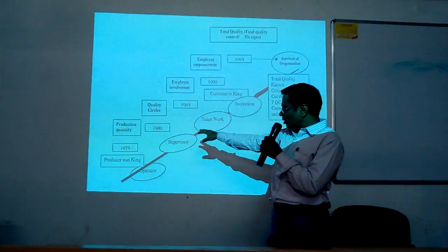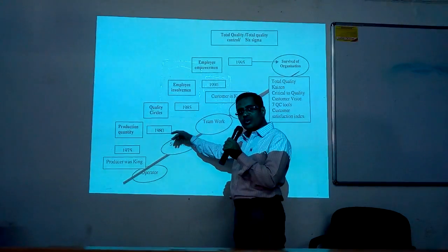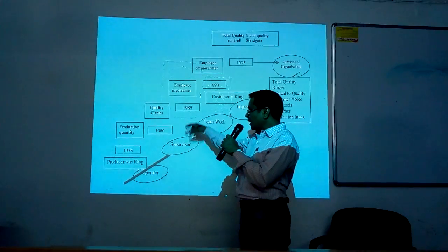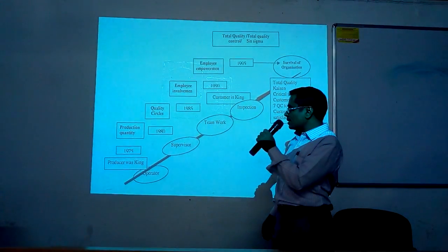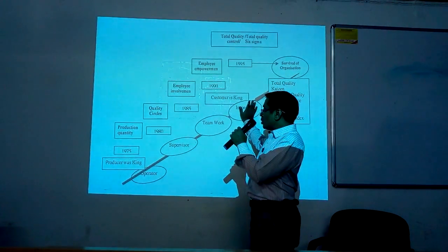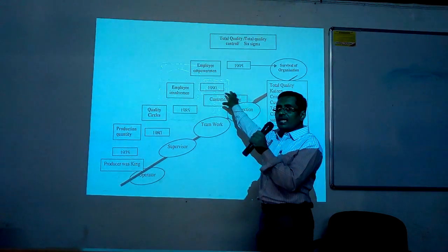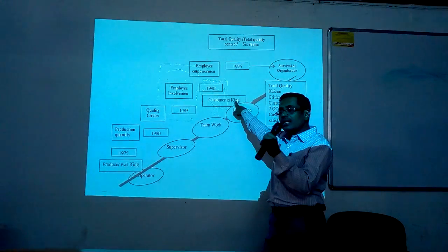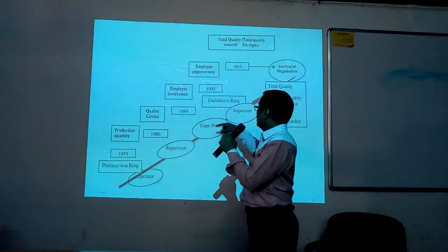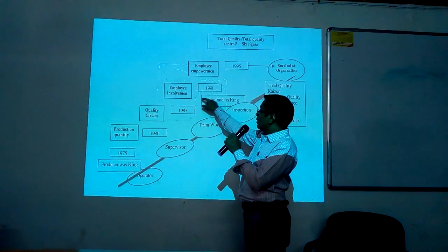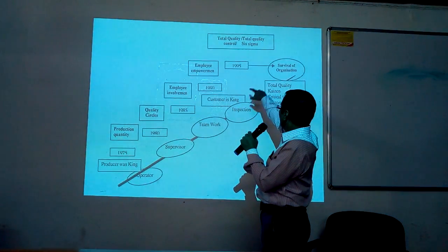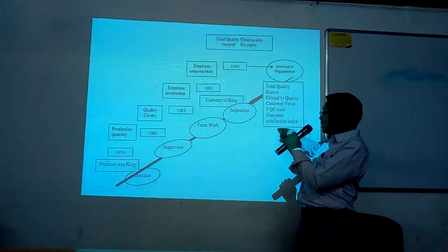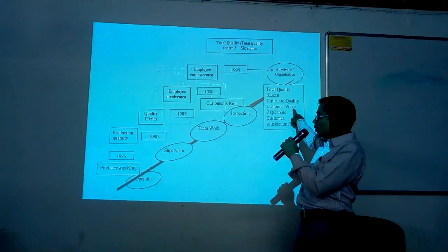Production continued, and by 1980 they started producing in more quantity — mass production. In 1985, quality circles and the inspection process started. By around 1990, the customer became the key — it was a buyers' market rather than a sellers' market. Nowadays, the basic quality tools used are total quality management, Kaizen, critical quality, and customer focus.